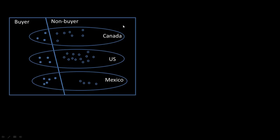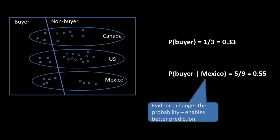So once again, we look here just to recap what we are talking about. We know from this information probability of buyer is 0.33. Probability of buyer given Mexico is much higher, it's 5 out of 9, it is 0.55. So the point is we are saying that evidence changes the probability. It enables better predictions.